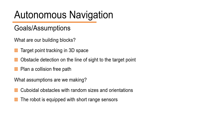Our first assumption is that the obstacles are cuboidal with random sizes and orientations. This however could be easily extended to work for any convex shape. The robot is also assumed to be equipped with a short-range sensor for detecting the obstacles along its course.